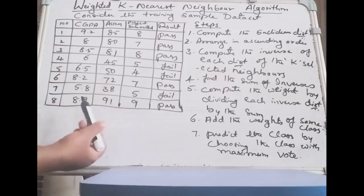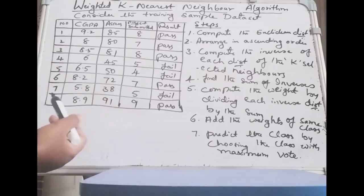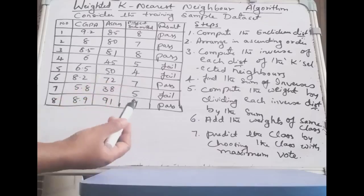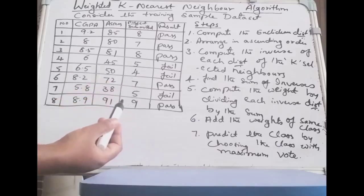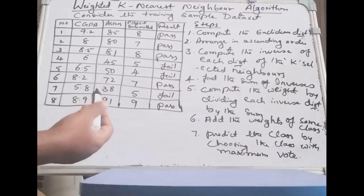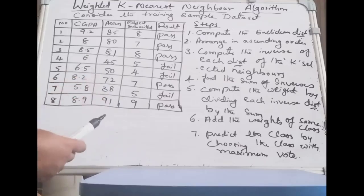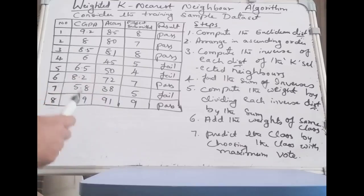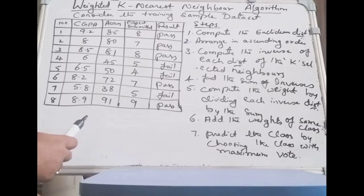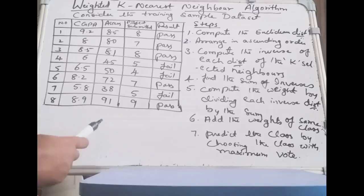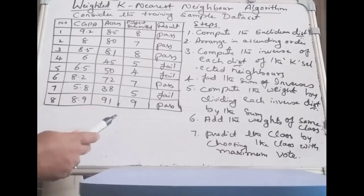Given a sample dataset, how we can choose the nearest neighbor for prediction. Weighted KNN is an extension of KNN. The principal idea is that the K closest neighbors to the test instance are assigned a higher weight in the decision compared to neighbors that are farther away. The weights are inversely proportional to distance.